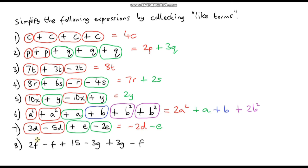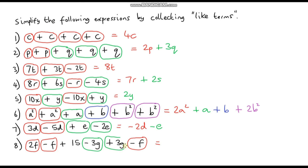Question 8, our last question: looking at the F terms — 2F minus 1F leaves 1F, and then minus another F leaves 0, so all the F terms cancel to 0. For the G terms: minus 3G plus 3G also cancels to 0. So all we are left with is the constant term, which is plus 15. Our answer is just 15.